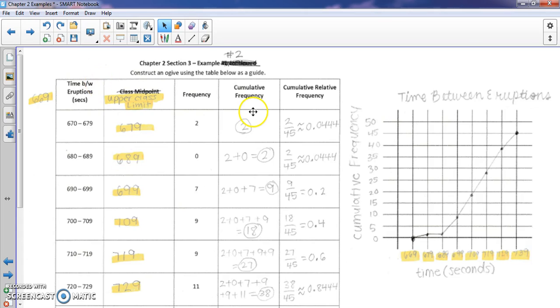So what's cumulative frequency? Cumulative frequency, you're going to take the frequency of that class and then add all the previous frequencies to that. So the first frequency there is 2.